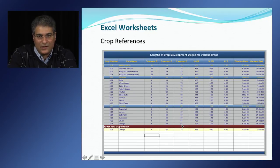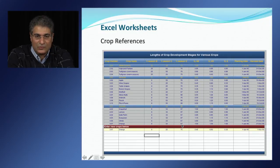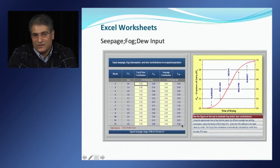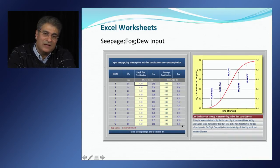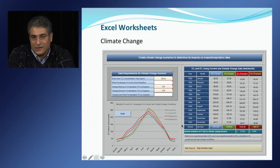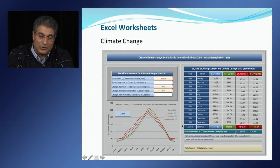The crop reference worksheet contains a list of crop numbers, crop names, percentages of season, crop coefficient values at critical growth points, and starting and ending dates. If crops are not available from the list, the program allows users to input their own crop numbers, names, percentage of season, crop coefficient values, and planting and harvesting dates. A separate worksheet is used to enter water contribution from seepage, fog, and dew for estimating daily change in soil water content. The climate change worksheet is designed to study the impact of climate change on reference evapotranspiration, crop evapotranspiration, and ET of applied water using different scenarios, comparing results with current conditions.